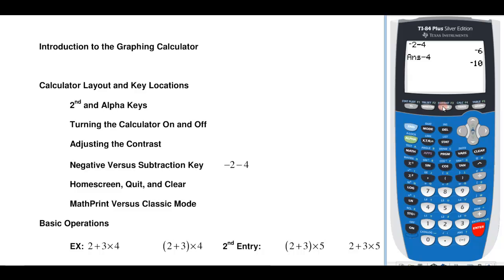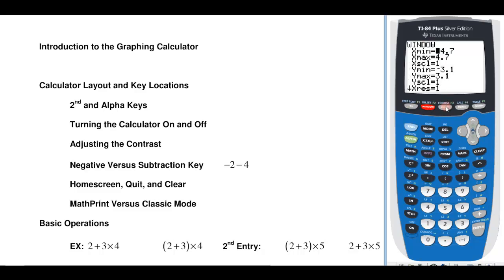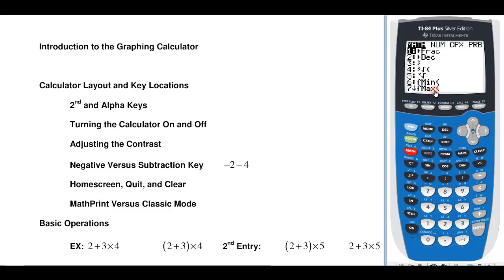Right now we're at the home screen. If you hit the Y equals button you'd get a different screen where you can enter things. You hit the window button, you'll get a different screen, and there are various menus. If you ever want to get back to the home screen where you can type things in and do some math, all you have to do is hit quit. Quit is right above the mode button, so to access it I'm going to hit the second button. That little up arrow tells me the next key I hit is going to be one of the secondary functions, and that'll quit and get me right back to the home screen.